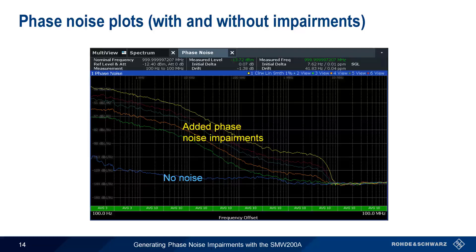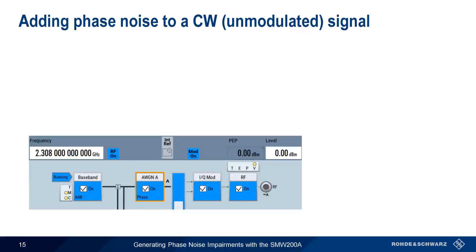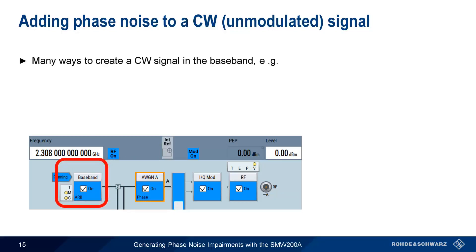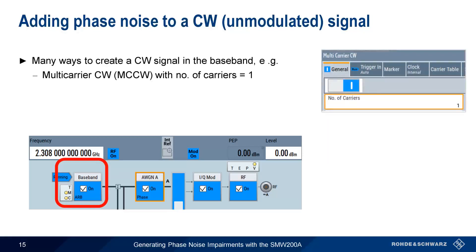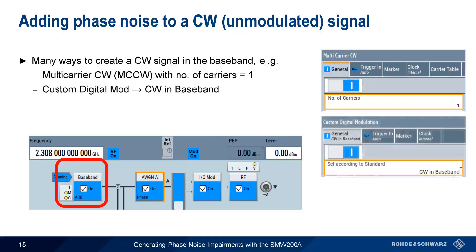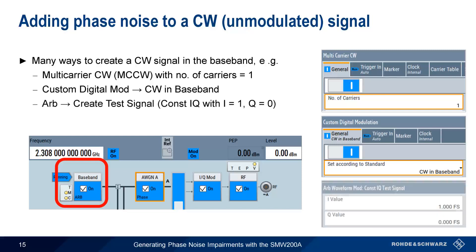We can also use the classic single sideband phase noise plot to visualize the effects of increasing phase noise impairments. The height and shape of the different traces is a function of the added phase noise defined for different frequency offsets. In our example so far, we've looked at adding phase noise to a 16QAM modulated signal. But what if we want to simply add phase noise to an unmodulated, or CW, carrier? Recall that phase noise is added in the baseband, or at the IQ level, so we need to create a CW signal in the baseband block. This can be done a number of ways on the SMW — for example, we can choose multi-carrier CW and set the number of carriers equal to 1, or by choosing CW in baseband as the standard in custom digital modulation. And finally, an arbitrary waveform containing a CW signal can easily be created directly on the SMW by selecting Constant IQ Test Signal and setting I equal to 1 and Q equal to 0.